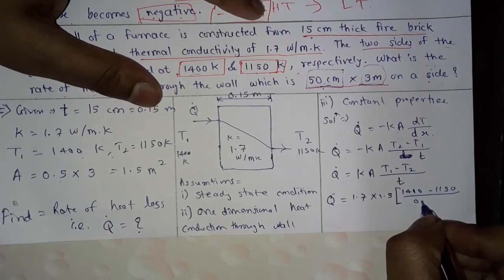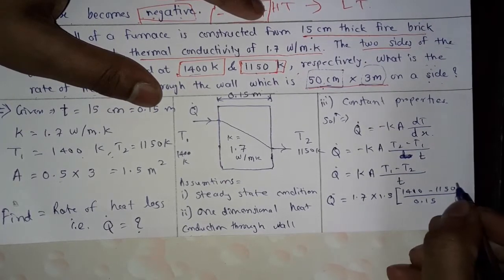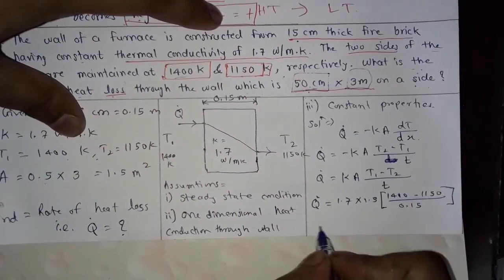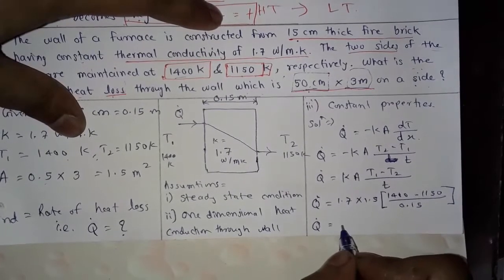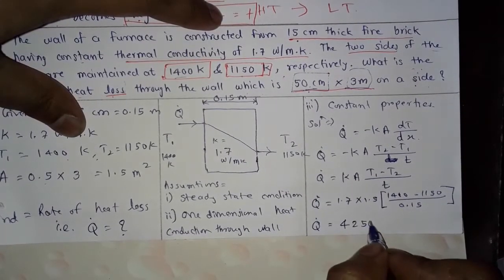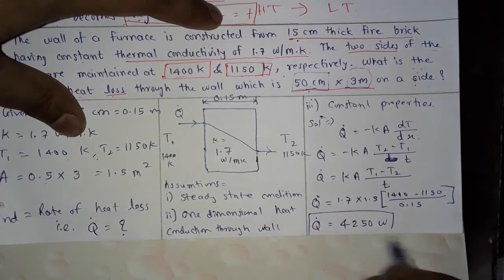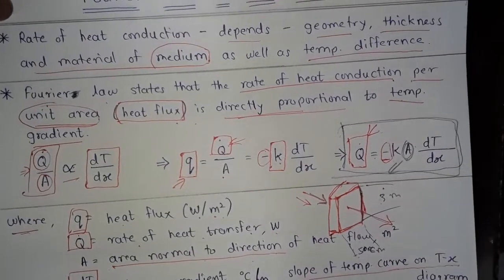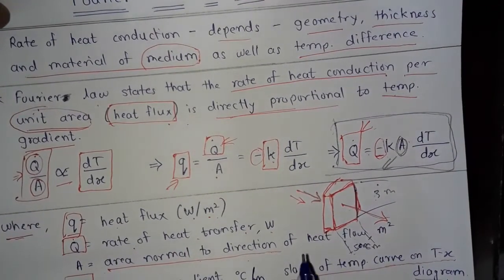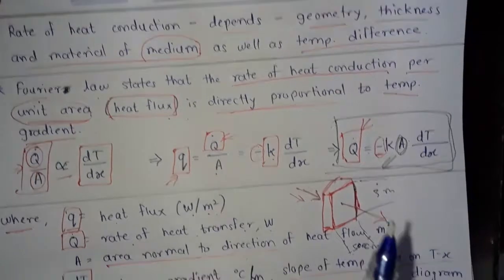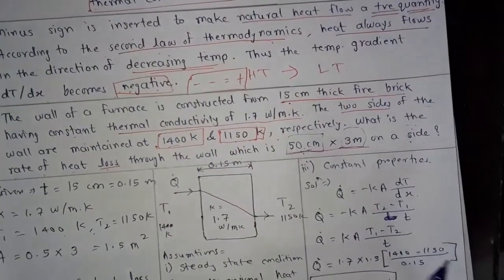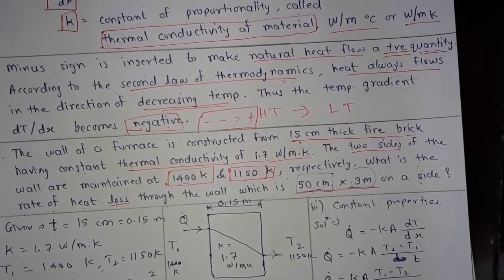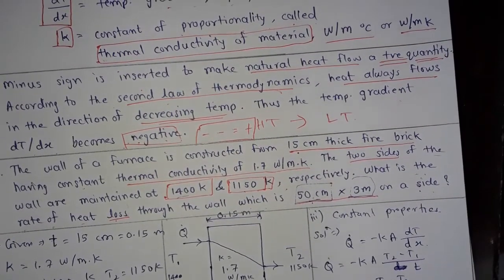Substituting the values with thickness 0.15 meters, after calculating we get q-dot equals 4250 watts. This is the answer. In this video we have understood the definition and equation of Fourier's law of heat conduction with the help of an example. Thank you for watching — please like, share, comment, and subscribe to my channel.